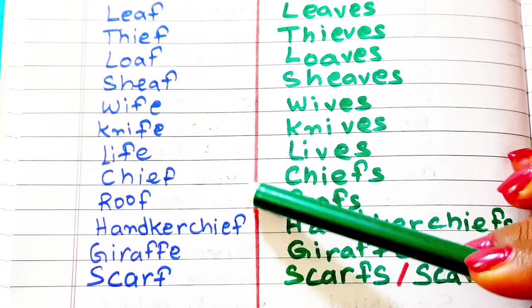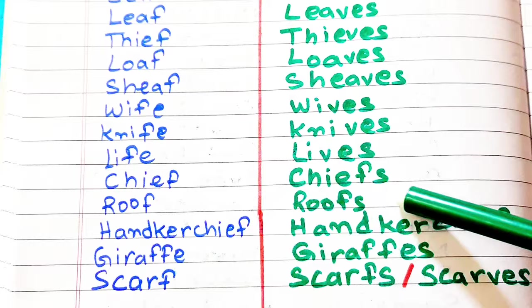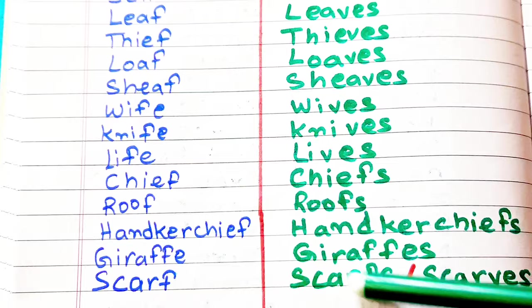But here are also some words ending with F, but when it changes into plural, it will add S in them, like chief, chiefs. Roof, roofs. Handkerchief, handkerchiefs. Giraffe, giraffes. Scarf, scarves or scarfs. It will change into both.